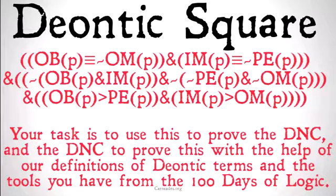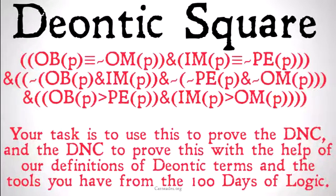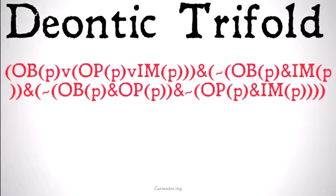Your task is to use the Deontic Square to prove the DNC, and then use the DNC to prove the Deontic Square, with the help of our definitions of deontic terms and the tools from 100 Days of Logic. It may seem like a long, complicated proposition, but it's just a lot of different conjunctions, and some of those conjunctions are going to be really easy to prove.